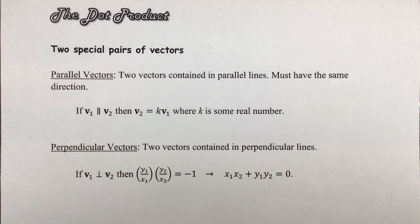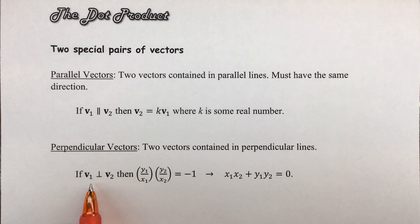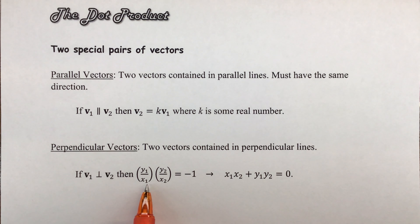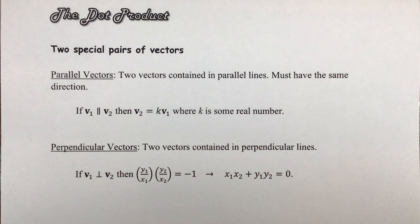The other types of vectors we want to look at are perpendicular vectors. Two vectors contained in perpendicular lines will be perpendicular vectors — that really just refers to their direction. So let's start with this statement: if vector one is perpendicular to vector two, then (y1 over x1) multiplied by (y2 over x2) is going to equal negative one. That might not sound too familiar, but what we're referring to here are the slopes of the vectors.